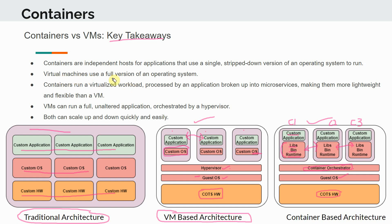Virtual machines use the full version of the operating system. Containers run a virtualized workload processed by an application broken up into microservices, making them more lightweight and flexible than a VM. In a virtual machine, though in this diagram we show one custom application, in industry what typically happens is you have more than one custom application actually running inside a VM.